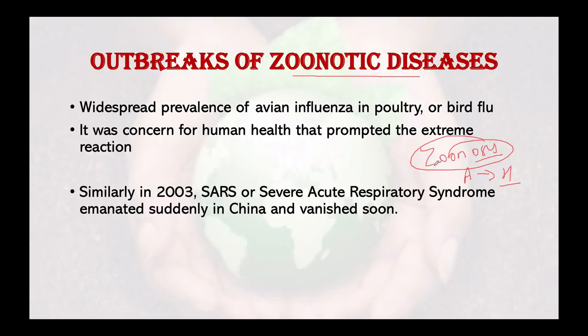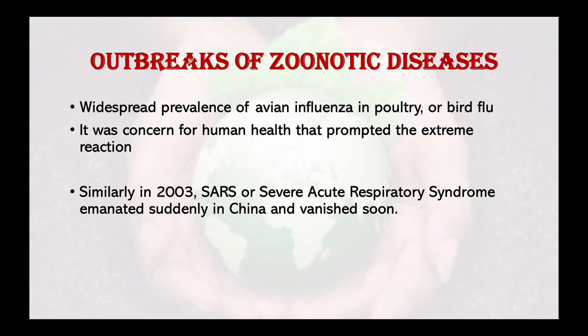Zoonotic diseases range from mild to severe, and some can even be fatal. Examples include rabies, which affects the nervous system, Lyme disease, dengue, malaria, and chikungunya. Some of these involve vectors, but they are still classified as zoonotic diseases.